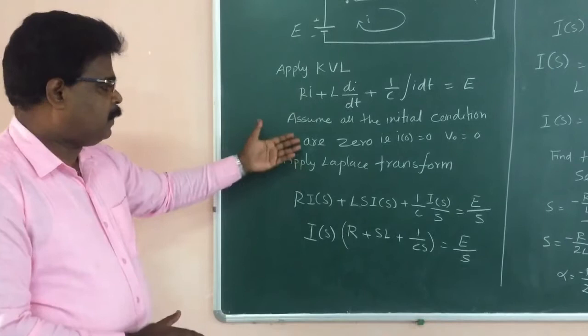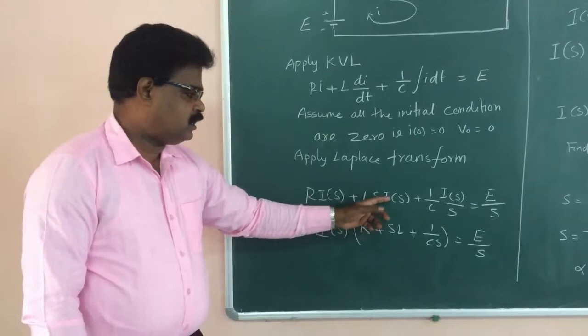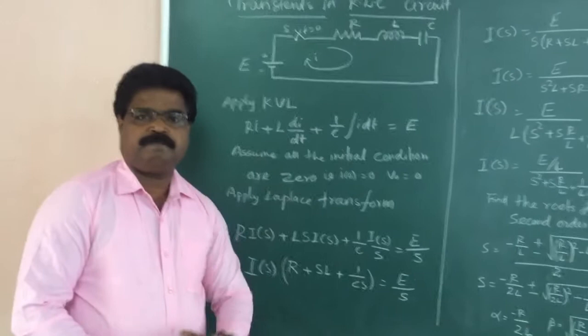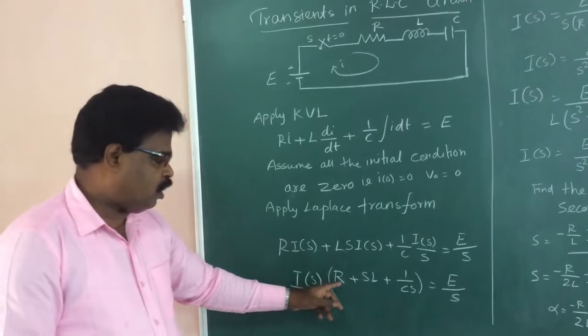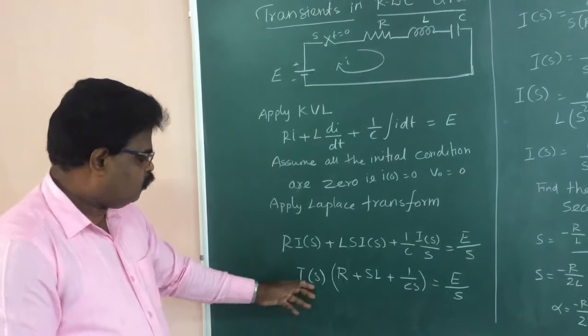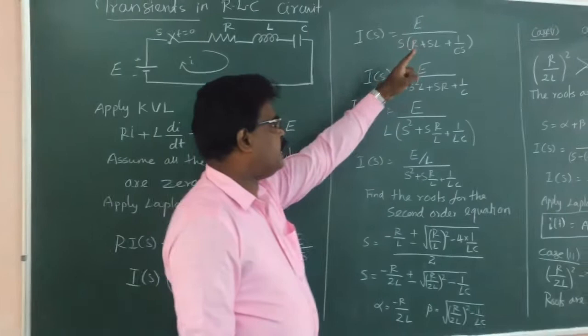Then we apply Laplace transform. So it is R into I of S, plus L into S into I of S, plus 1 by C into I of S divided by S, that is equal to E by S. We are not considering initial conditions — we assume them to be zero. Take I of S outside: I of S times the quantity R plus S·L plus 1 by CS equals E by S. Then I of S equals E divided by S times the quantity R plus S·L plus 1 by CS.